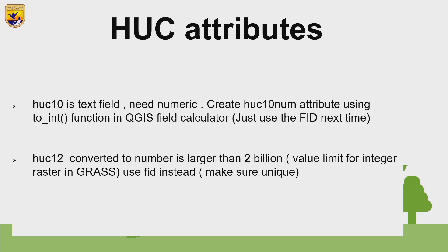For the HUC attributes, HUC-10 is a text field with a leading zero for many of them. For raster processing in GRASS, you need numerics, so I created another attribute called HUC-10 num and used the to-integer function in QGIS to convert it. The HUC-12 code is larger than 2 billion, so it doesn't fit in the integer numeric system GRASS uses for integer rasters. So I just used the FID number instead. As a general guideline, make sure whatever you're using is unique.